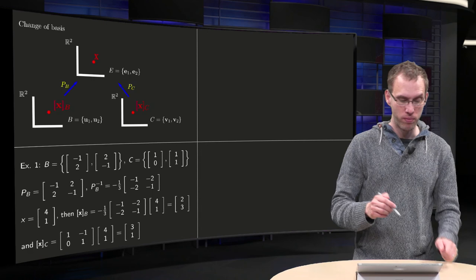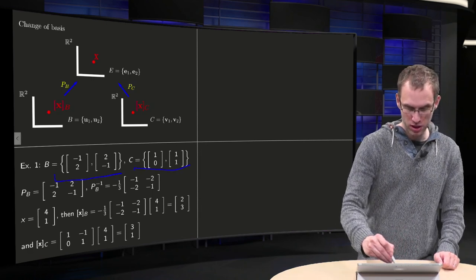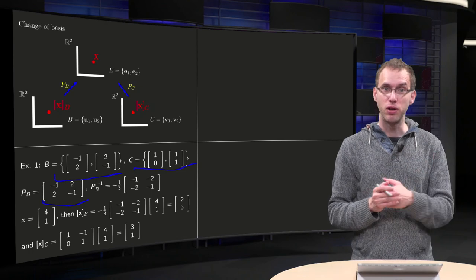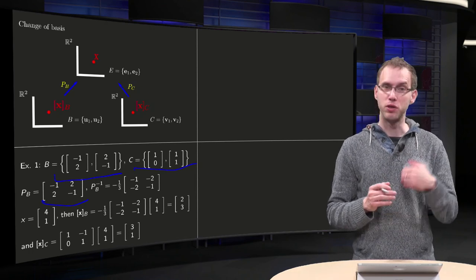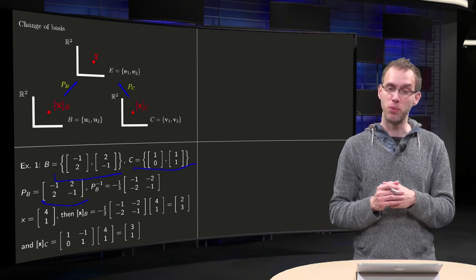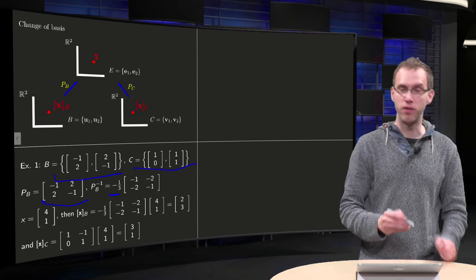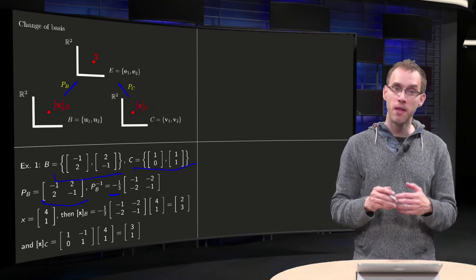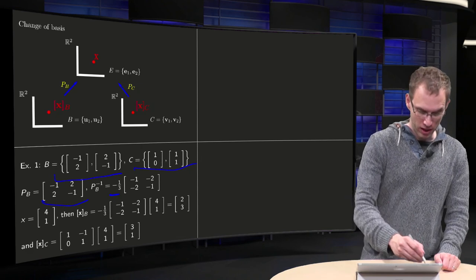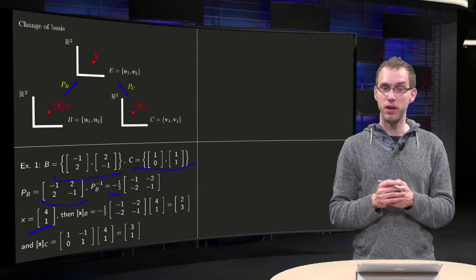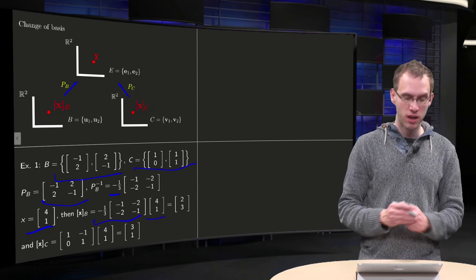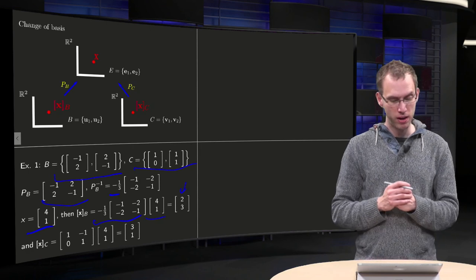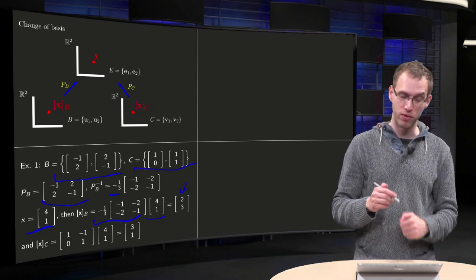Let's look at an example. We have a basis b and a basis c, so we can compute P_b by plugging the basis vectors into a matrix. We can also find its inverse. The determinant equals minus 1 times minus 1, which is 1, minus 2 times 2 minus 4, so 1 minus 4 equals minus 3, giving us minus 1 over 3. So there we have P_b inverse. x_b equals P_b inverse times x equals (minus 4 minus 2) equals minus 6, times minus 1 over 3, equals 2. And minus 8 minus 1 is minus 9, times minus 1 over 3, equals 3.